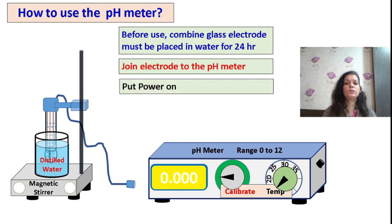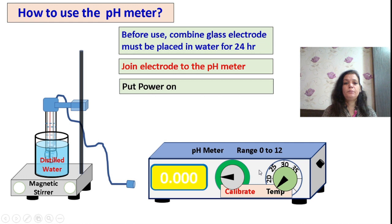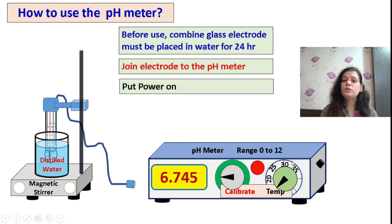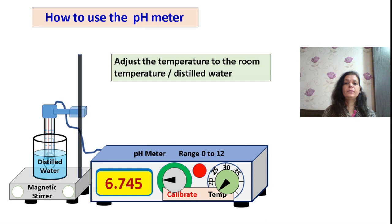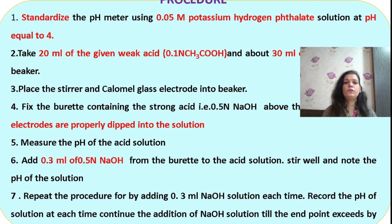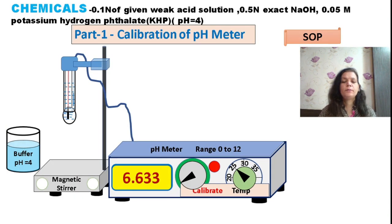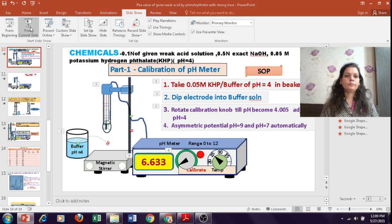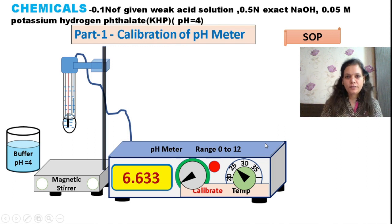Switch on the instrument and make it power on — it will show a red indicator to confirm the instrument is on. Before starting any instrumental analysis, you need to standardize the apparatus to confirm the readings obtained are accurate and precise for your experiment.